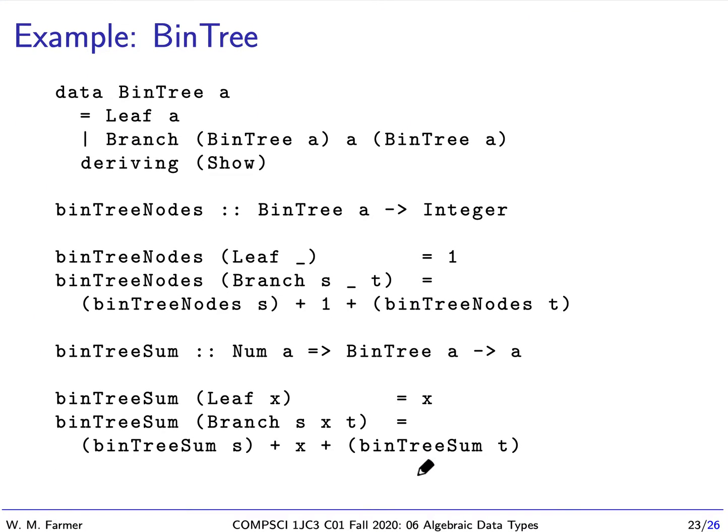So that's an example using list and maybe. Here's some examples using bin tree. Here's the algebraic data type defined right here. And I'm going to define some functions versus bin tree nodes. That's going to be the number of nodes in a bin tree. And it's defined by pattern matching. And we have two patterns. The first is we have a leaf node. And the second, we have a branch node. And it doesn't matter, the reason we have underscores here, it doesn't matter what values are attached to the nodes.